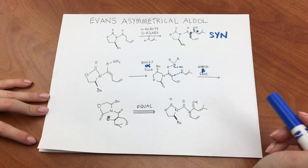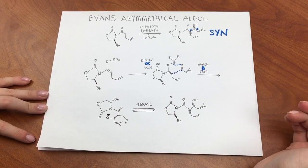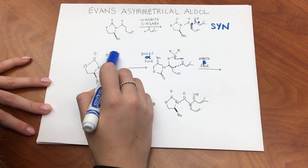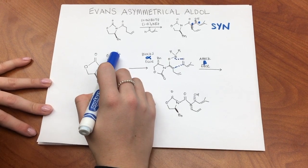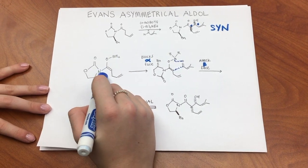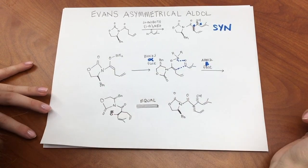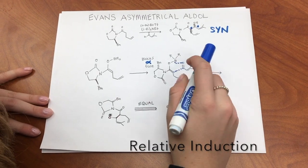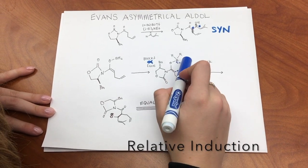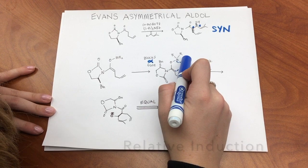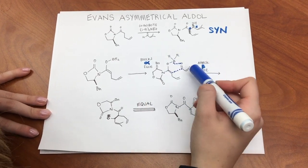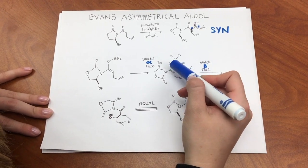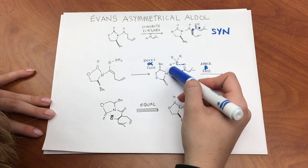I'm going to walk you through the reasoning behind the production of this aldol product. Utilizing a boron reagent, the enolate is formed. Then, there is coordination between the carbonyl of the aldehyde and the boron, as well as the carbon double bond of the carbonyl and the enolate double bond.